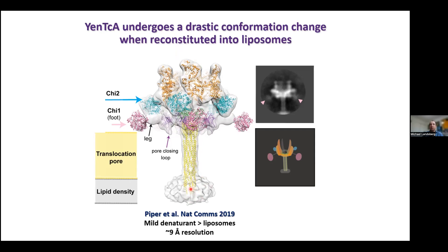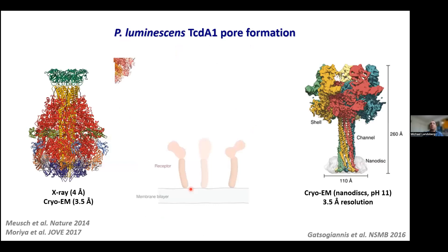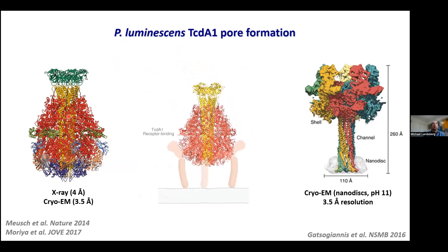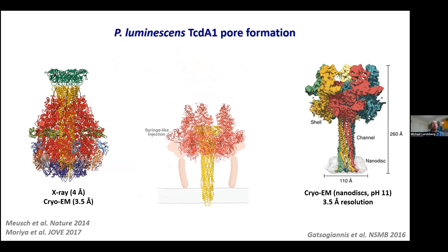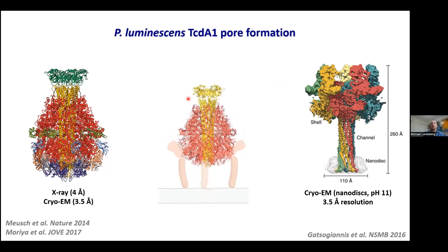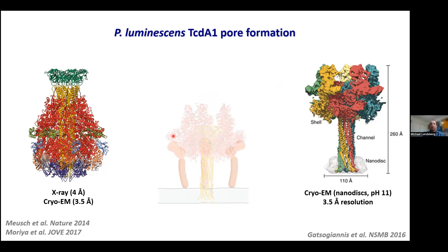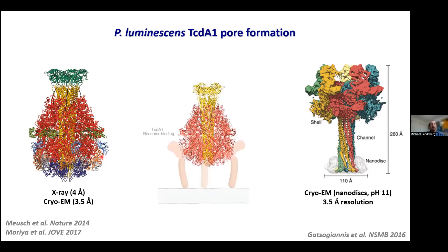This conformational change is very similar to one documented for Photorhabdus luminescens toxins — Stefan Raunser gave a nice talk on this recently. His group, working in parallel with ours, obtained cryoEM and X-ray structures of the Photorhabdus toxin complex in its pre-pore and pore states reconstituted with nanodiscs, visualizing the same conformational change: an opening of the surrounding upper helical shell, the central translocation pore driving down into the cell membrane. On the surface of the TcdA1 structure, putative receptor-binding domains are highlighted — all beta-sandwich folds potentially implicated in receptor recognition based on their position and the fact that beta-sandwich folds commonly facilitate protein-protein interactions.